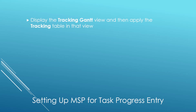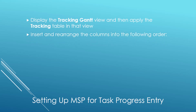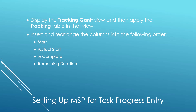First, display the Tracking Gantt view in your project, and then apply the Tracking table in that view. In the Tracking table, insert and rearrange existing columns into the following order: Start, Actual Start, Percent Complete, Remaining Duration, Actual Finish, Finish, and Resource Names.